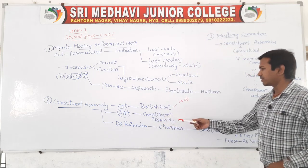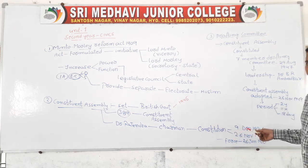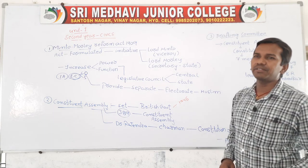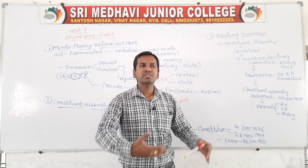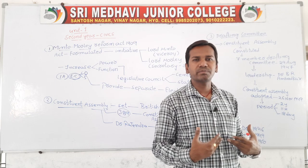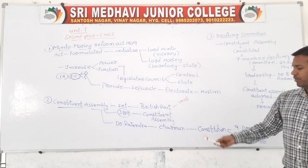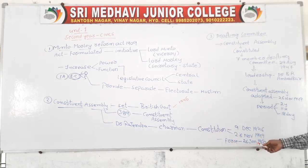The first chairman of the Constituent Assembly was Dr. Rajendra Prasad. The first meeting was conducted on 9th December 1946. The constitution was completed and adopted on 26th November 1949, meaning almost all the work of constitution preparation was completed and the constitution was adopted by the Constituent Assembly.